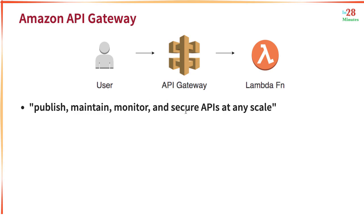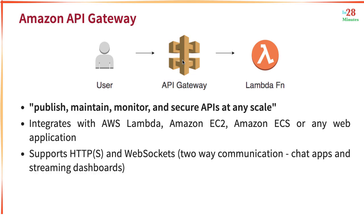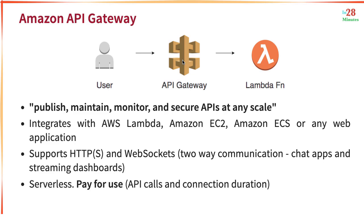API Gateway is all about publishing, maintaining, monitoring, and securing APIs at any scale. It integrates with AWS Lambda, Amazon EC2, ECS, or any web application. API Gateway supports HTTPS and also WebSockets. Some applications like chat apps and streaming dashboards need two-way communication, and that's what WebSockets allow you to do. API Gateway is serverless, so you pay for the number of API calls coming in and the connection duration.